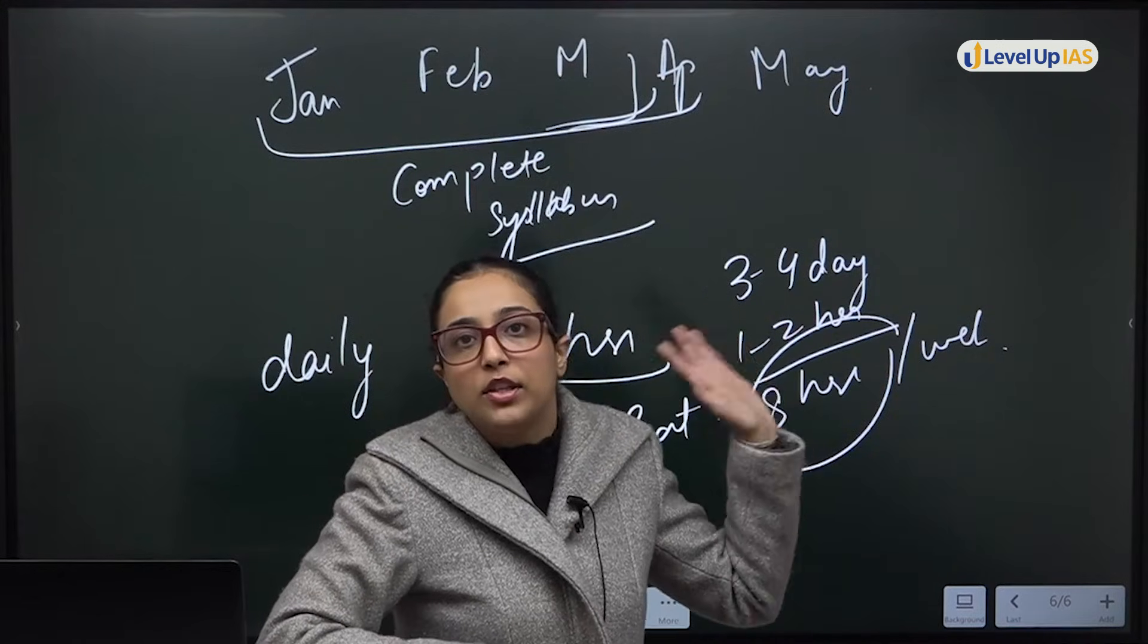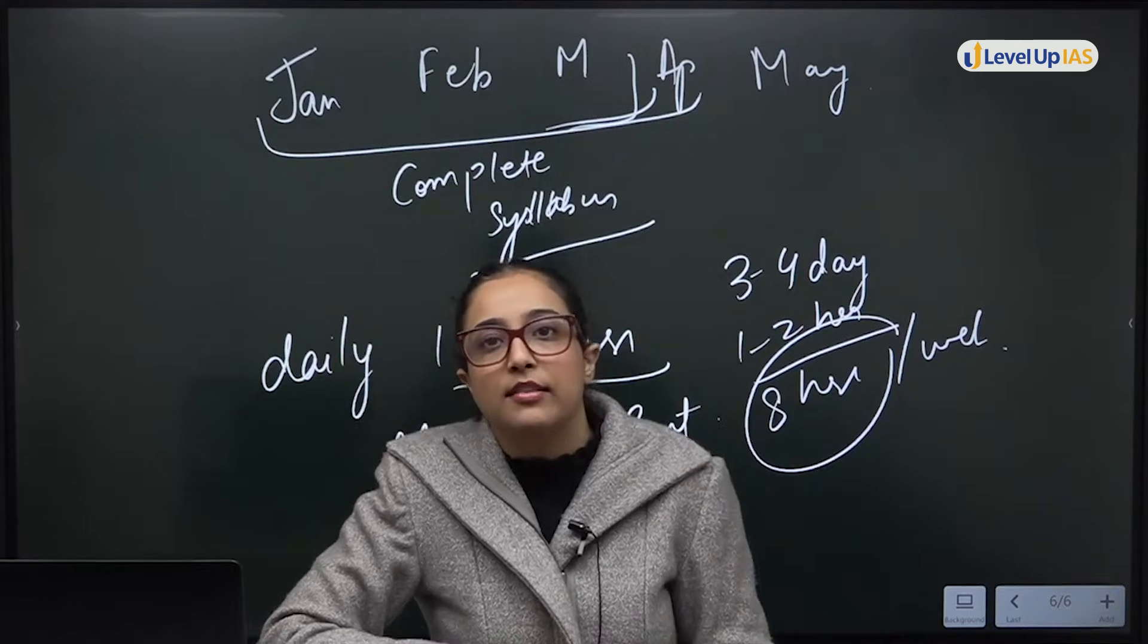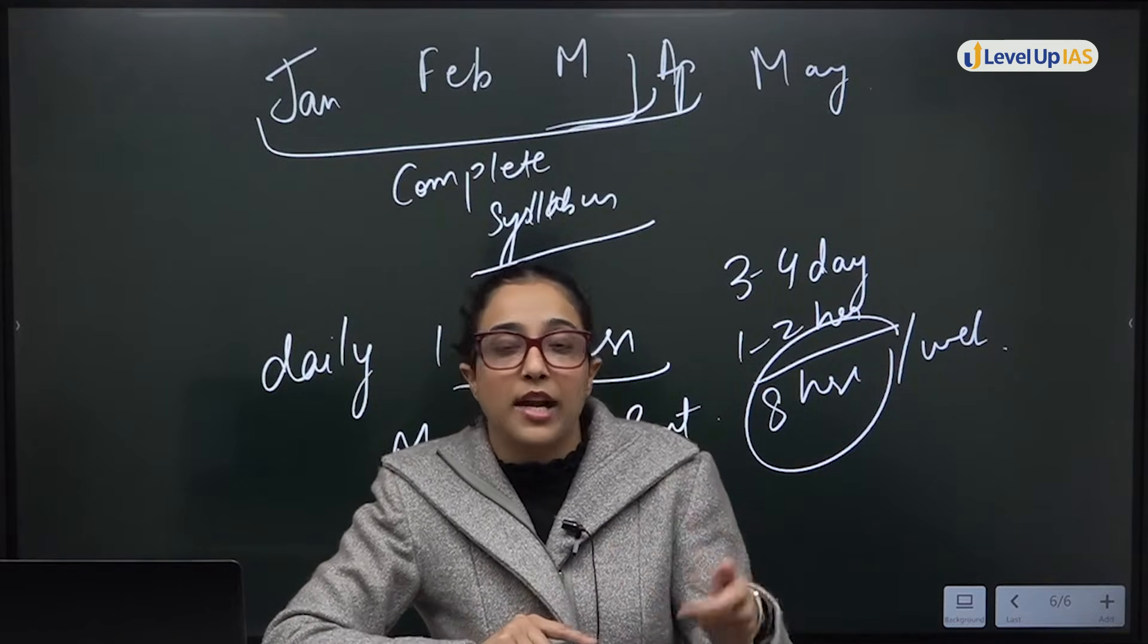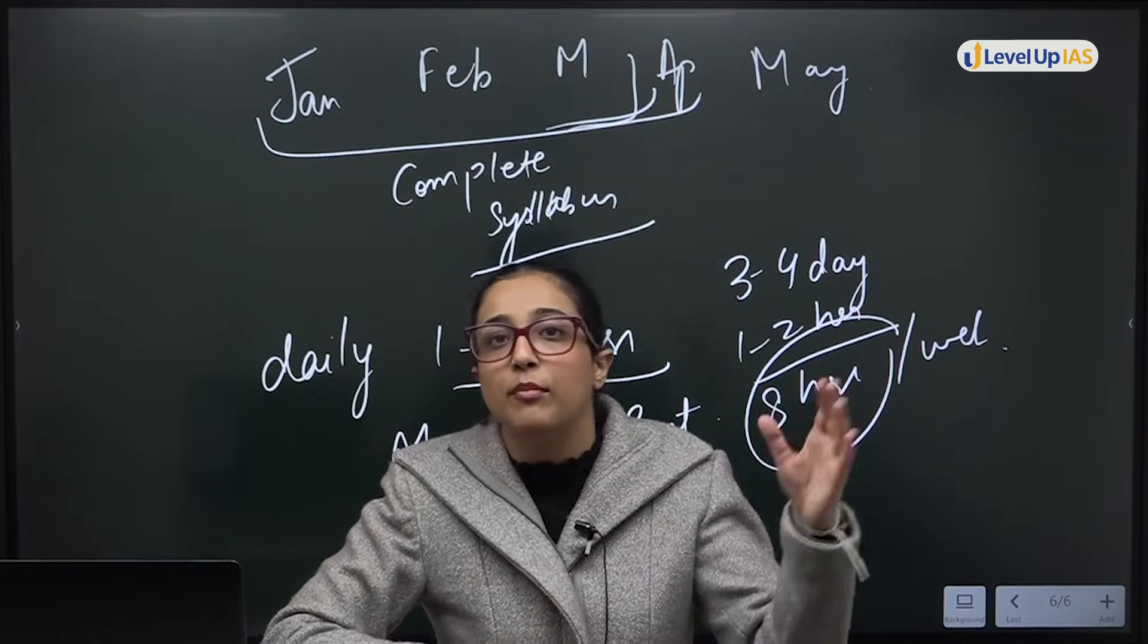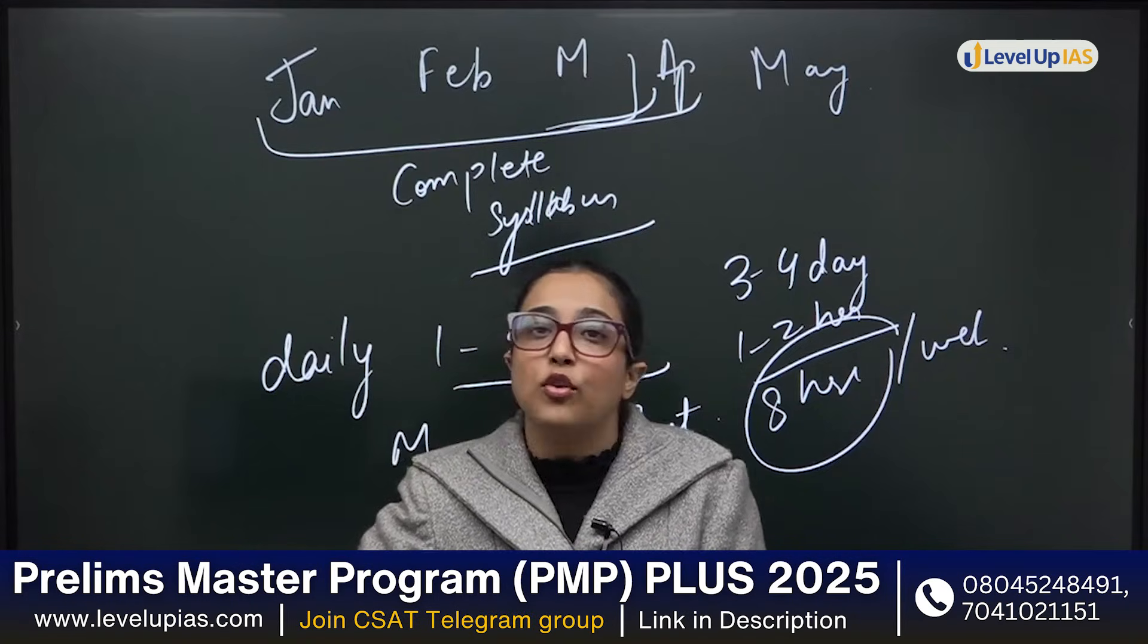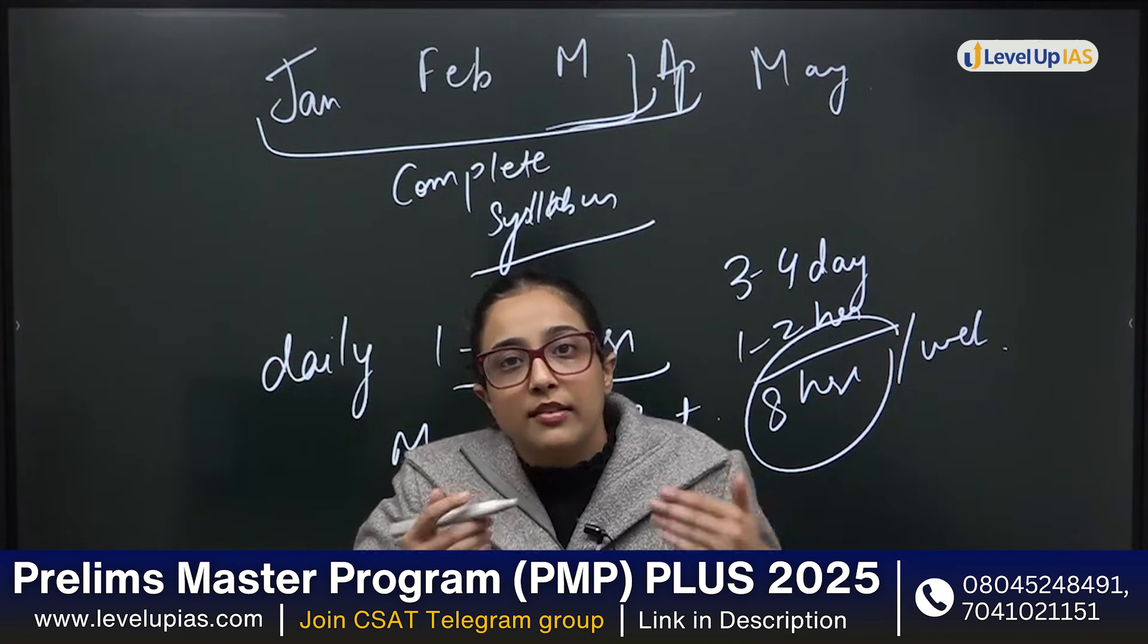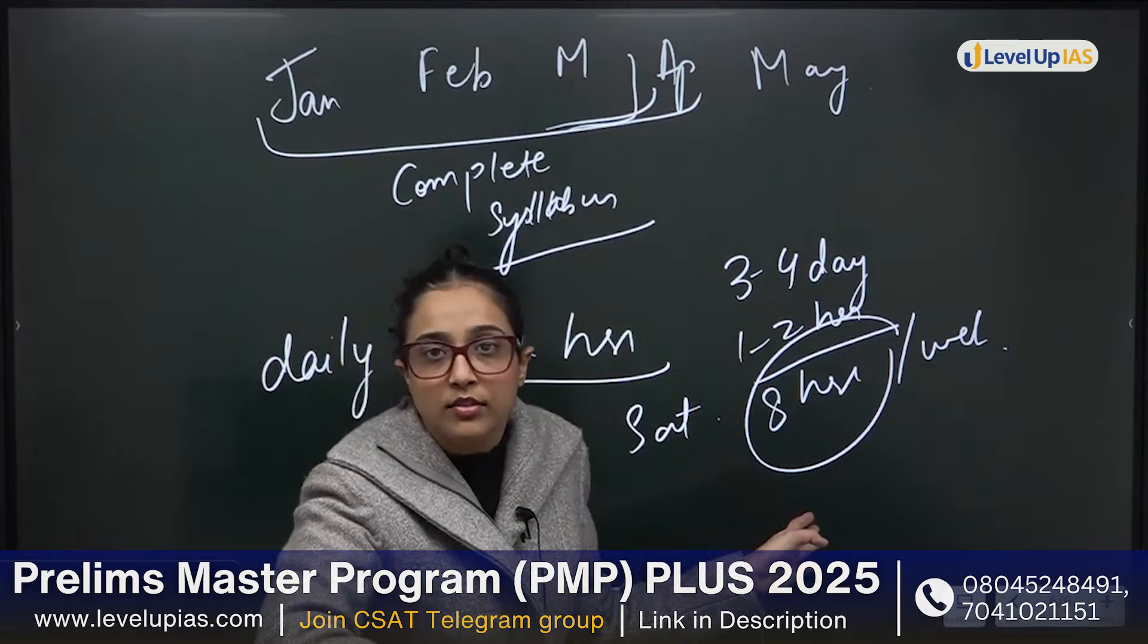You know how many topics are there in quantitative aptitude. We take fifty plus classes, that too of two and a half, three hours. Fifty around classes are there. Then the syllabus is complete. We also give practice assignments to do at home. So we do topic-wise questions. You do not do the whole practice assignment in class, right? That means you do at home. So that means fifty classes of three hours each. One fifty hours plus your self practice. And at the same time someone who is only doing eight hours a week, you do not work.